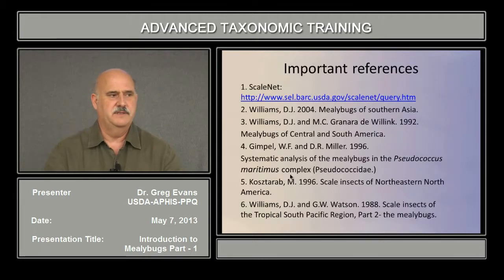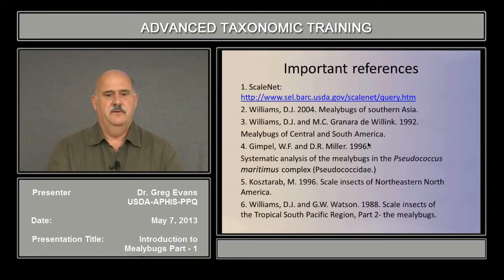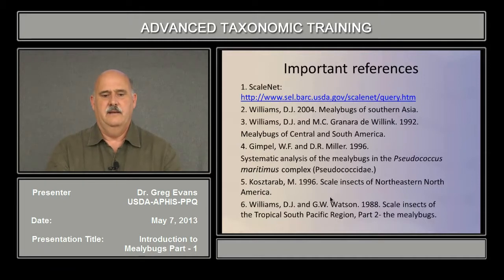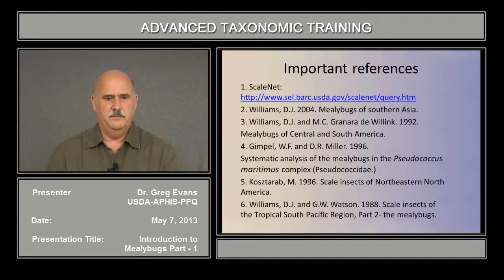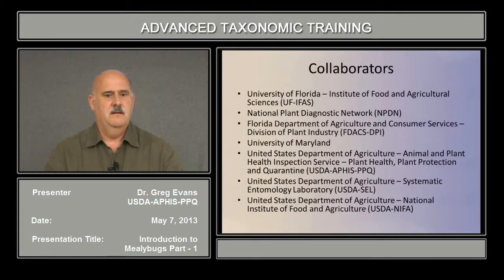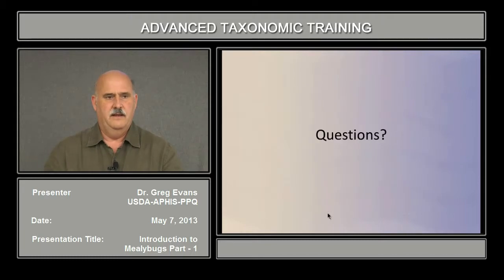These are some important references. ScaleNet is essential if you're going to be identifying scale insects — access that website along with different regional works: Mealybugs of Southern Asia, of Central and South America, the systematic analysis of the Pseudococcus maritimus complex, Northeastern America, and Williams and Watson's Scale Insects of the Tropical South Pacific Region. All of those will have keys and will help you identify. I would like to recognize the collaborators of this project.